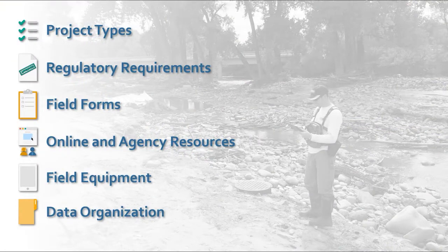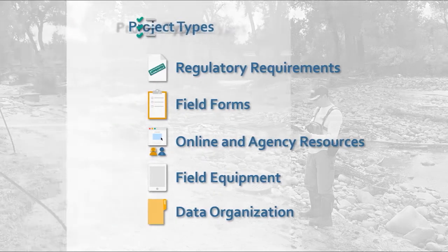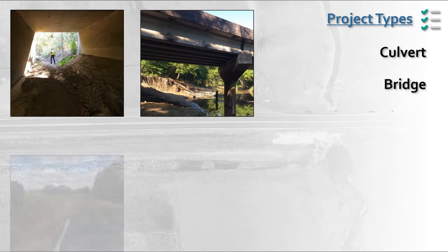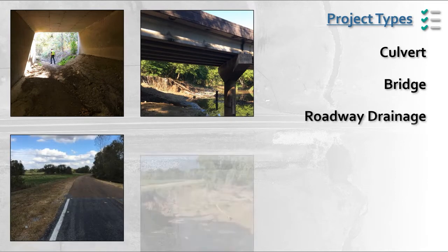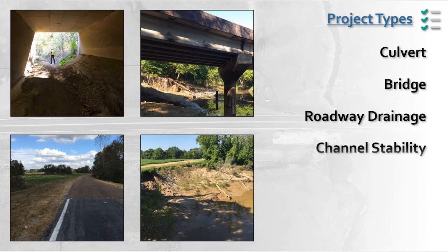There are several topics to consider prior to obtaining data and conducting a site reconnaissance. Determining some information in the office to help you understand the project will be key to an effective site visit. Consulting other disciplines through this process is really helpful so that important considerations are not missed. The first thing to consider is what type of project will you be scoping or working on? There are many reasons for reconnaissance, and they may include evaluating an existing culvert or bridge for rehabilitation or replacement, evaluating a site for a new bridge or culvert, assessing roadway drainage systems, assessing channel stability and the need for erosion control, or investigating a maintenance concern. The type of project will dictate the kind of data and information to obtain prior to and during the site visit.